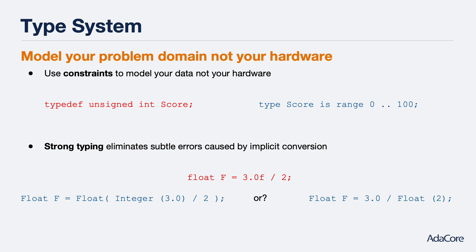Consider a system in which you need to represent a score on a test. In C, one would use a type definition to alias an unsigned integer. But notice that this type still allows assignment of an invalid grade, such as 120. The equivalent definition in Ada allows us to specify that valid grades are only in the range 0 to 100. During compilation, the compiler will automatically insert runtime checks to ensure that an invalid value is never assigned to a variable of this type. If the algorithm produces an invalid result, the programmer will quickly receive feedback about this error.